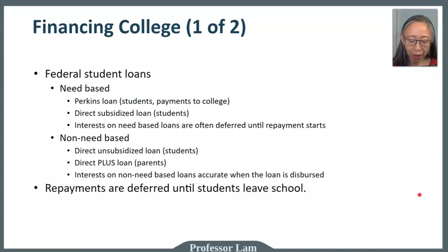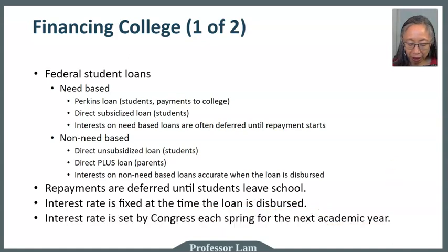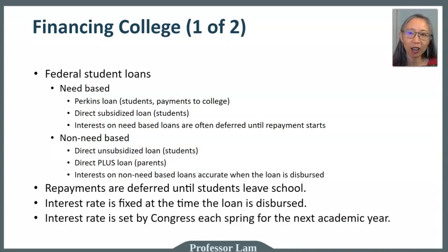Repayment on both types of loans is deferred until the student leaves school. The interest rate is fixed at the time the loan is originated. This is important because the interest rate is set by Congress every year, so you may take out a different loan each year you're in college, and the interest rates on those loans can differ because Congress sets a new rate each academic year.